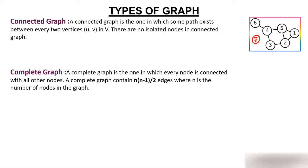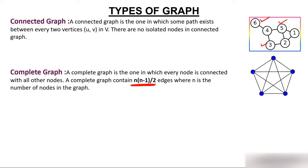A complete graph is one in which every vertex is adjacent to all other vertices — there is a direct connection between every pair of nodes. For example, node 4 is adjacent to nodes 3, 5, and 6, but not to node 1 if there's no direct edge. In a complete graph, every node is directly connected to every other node.